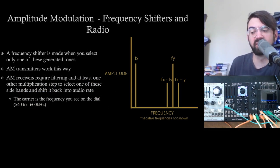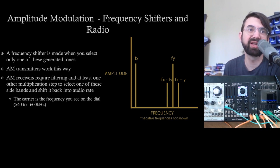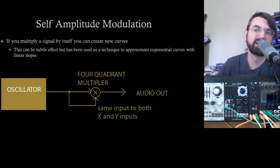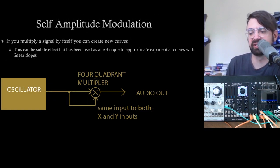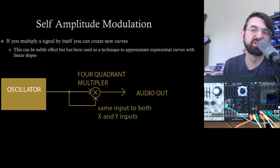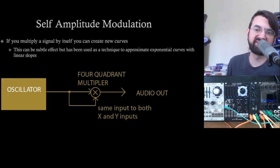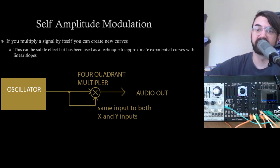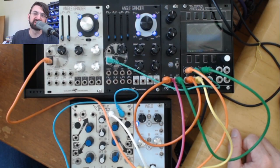A frequency shifter is made when you select only one of these generated tones — this is how AM transmitters work. AM receivers require filtering and at least one other multiplication step to get one of these sidebands and shift it back into audio rate. It's worth mentioning self-amplitude modulation, which isn't always interesting but is worth knowing about: if you modulate one signal by itself, you can get interesting wave shapes, generally subtle variations in tone, because you're essentially squaring the wave shape. So if you put in two straight lines, you'll get x squared, which is kind of like a sinusoidal shape.